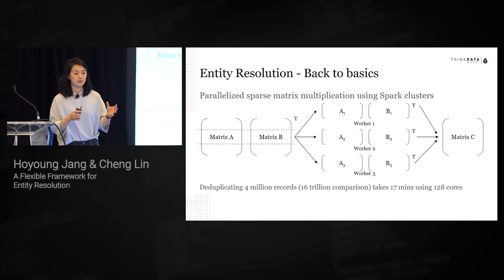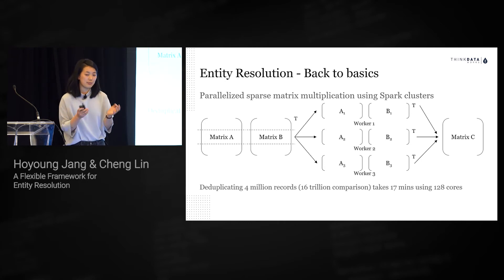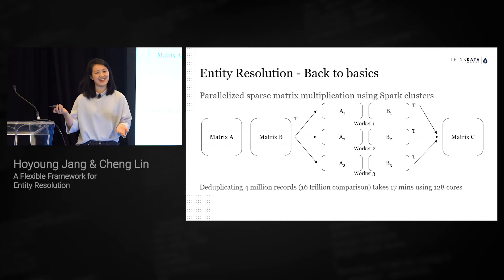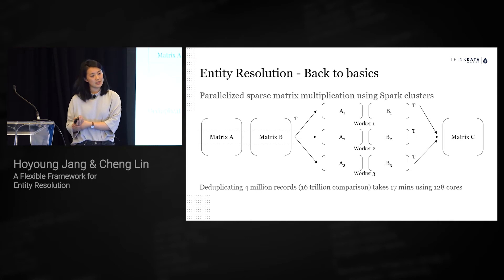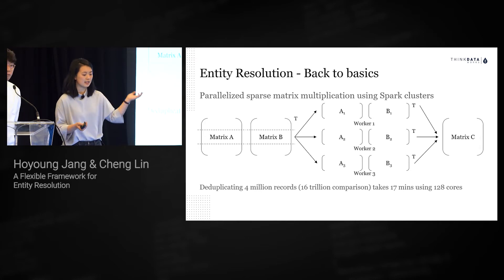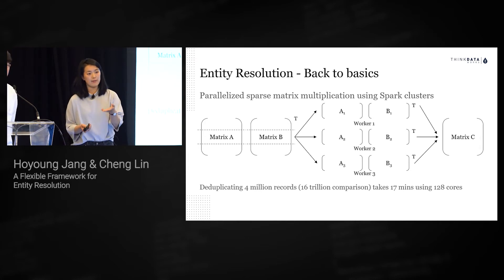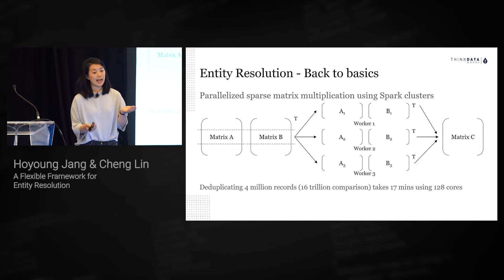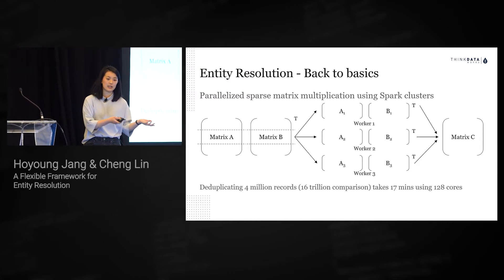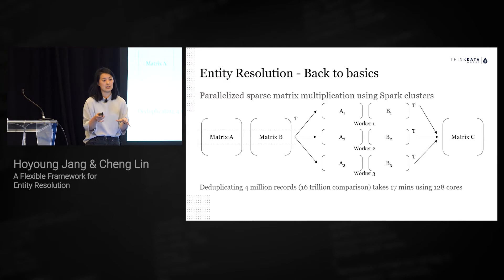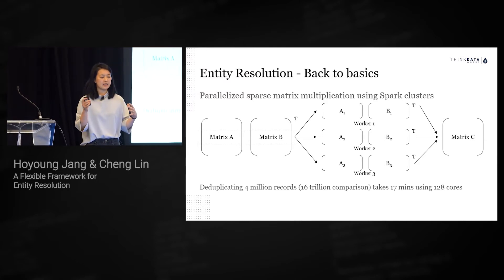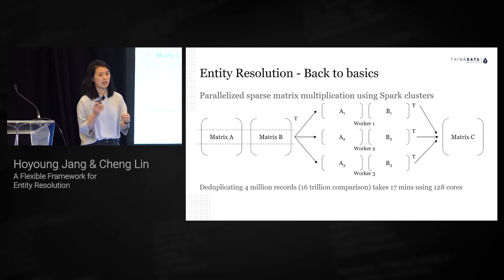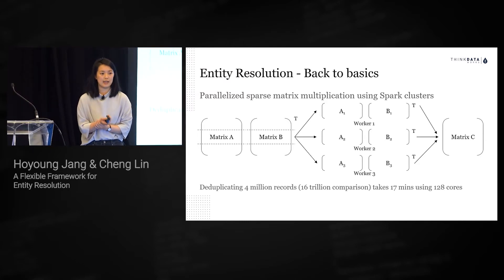We parallelized our matrix computations using Spark clusters. Applying a stress test, we could deduplicate a data set of 4 million entries — which translates to 16 trillion comparisons, since it's an O(N²) problem — in 17 minutes using 128 cores.